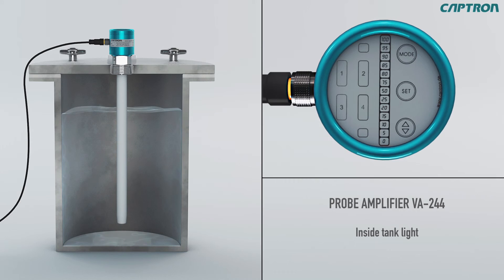Optionally, there is lighting available for the inside of the tank of the probe amplifier VA244. To turn on the LEDs, just touch the set button in measuring mode. The lighting shuts off automatically after 15 seconds to avoid overheating and can be turned on again after waiting 5 seconds.